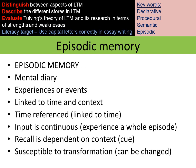Episodic memory covers experiences or events that have happened to us within our lives, and is often referred to as our mental diary. It is linked to time and context — for example, how old you were or where you were at the time. The input for this is continuous, so you may be able to recall an entire experience in one go — for instance, talking through what happened on your 15th birthday from start to finish.